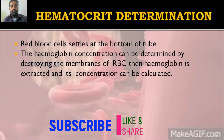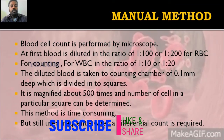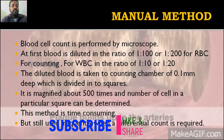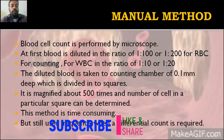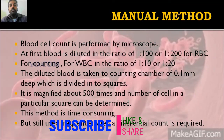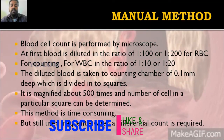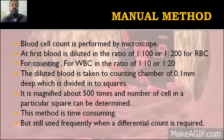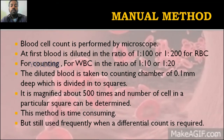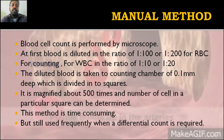The next method is the manual method. In the manual method, blood cell count is performed using a microscope — we manually count the blood cells. To count blood cells, we must first dilute the blood. For RBC measurement the dilution is 1:100 or 1:200, and for WBC measurement it is 1:10 or 1:20, because the RBC count is much higher than the WBC count.